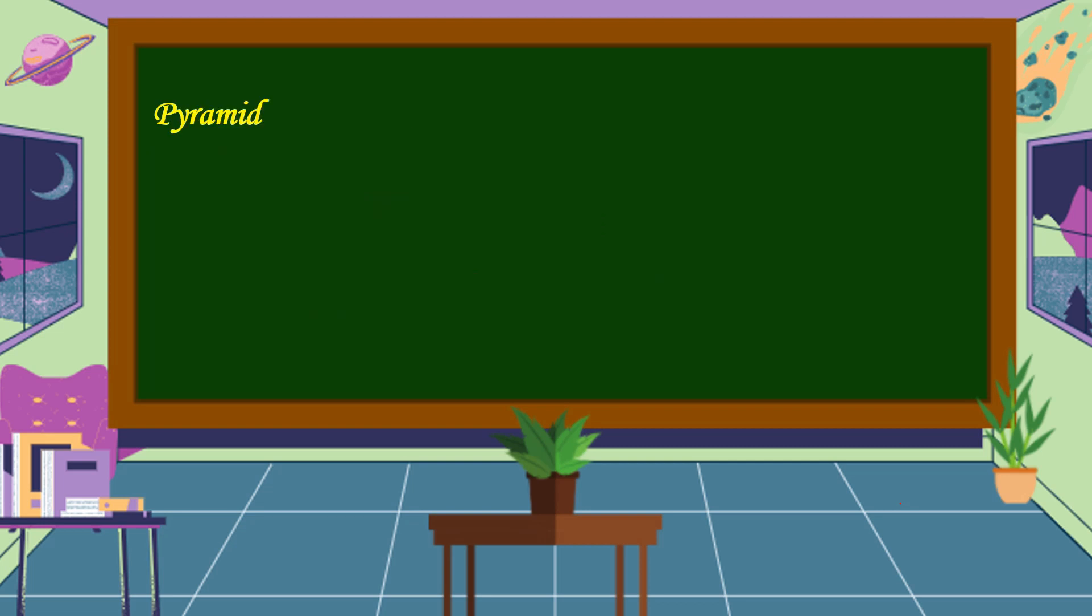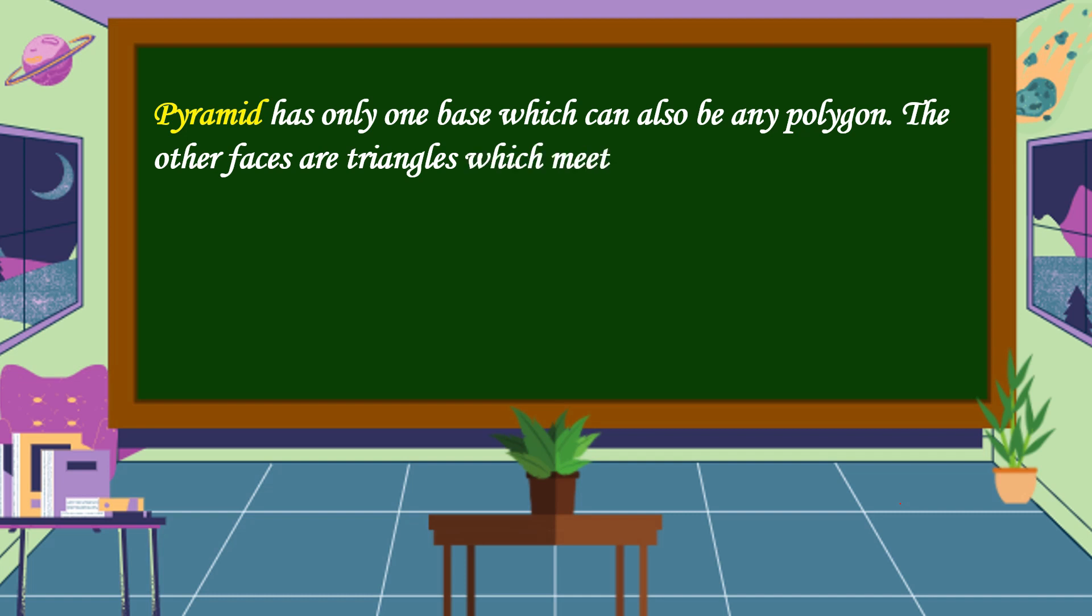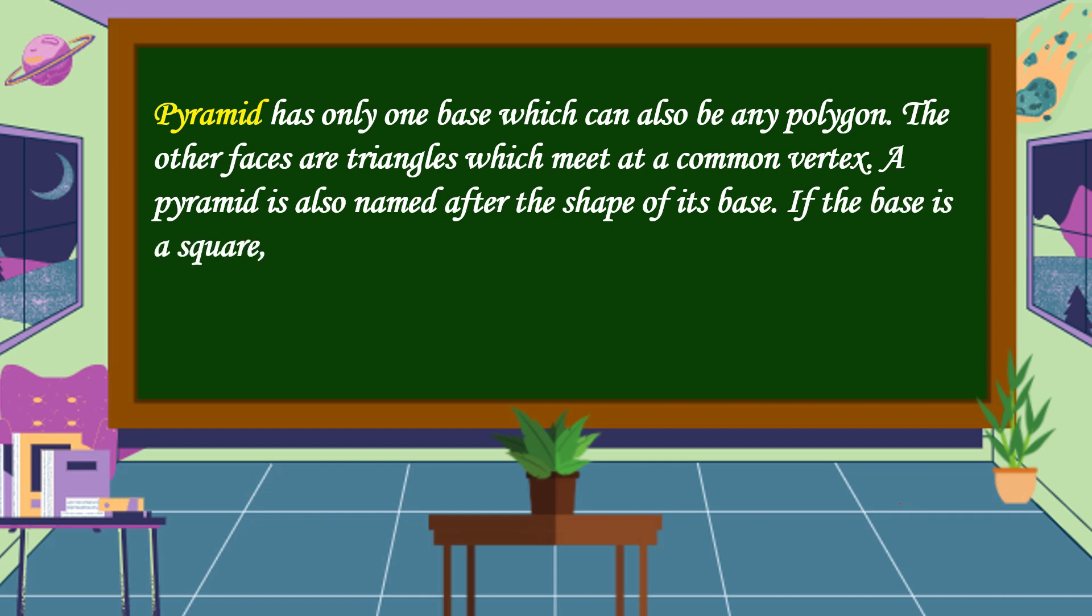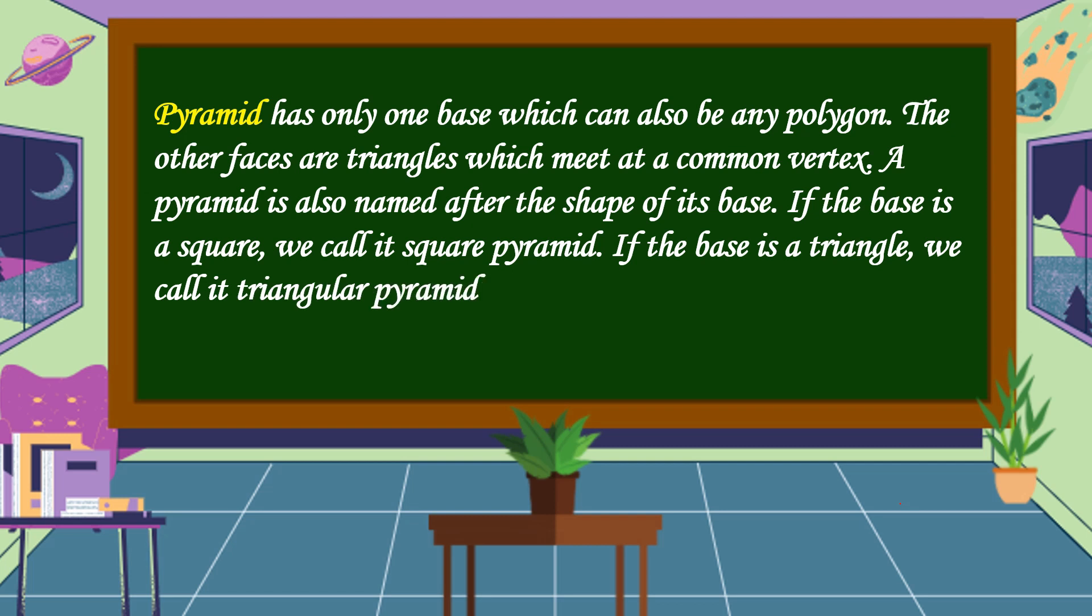What is a pyramid? A pyramid has only one base, which can also be any polygon. The other faces are triangles, which meet at a common vertex. A pyramid is also named after the shape of its base. If the base is a square, we call it square pyramid. If the base is a triangle, we call it triangular pyramid. If the base is a hexagon, we call it hexagonal pyramid.